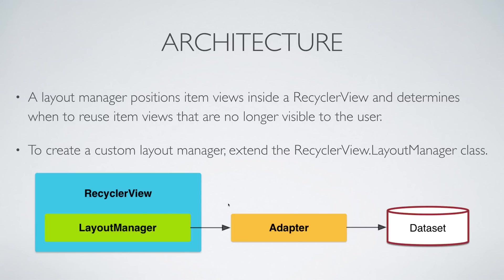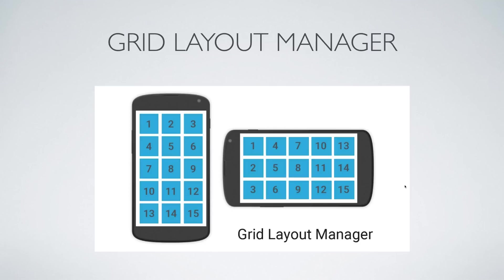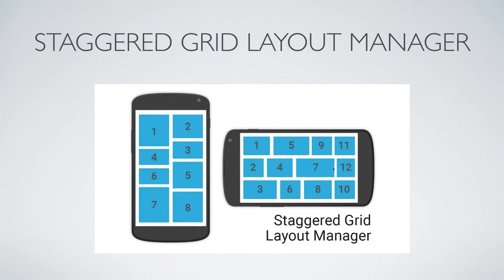In Bucket Drops, the data lives in the Realm database. The adapter controls what item to display at which position, and the LayoutManager controls when to recycle views and how they are drawn. There are three basic types of layout managers Android provides: the LinearLayoutManager (used in Bucket Drops), which can be vertical or horizontal; the GridLayoutManager; and the StaggeredGridLayoutManager, where each item can have a different size.